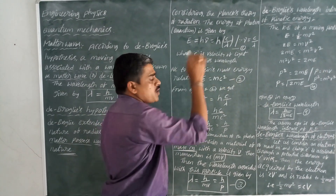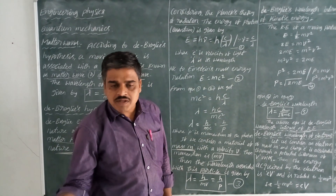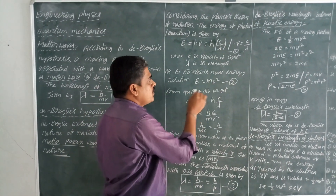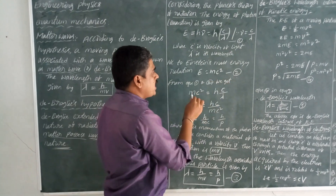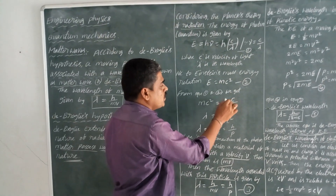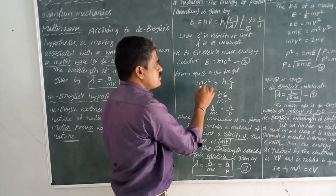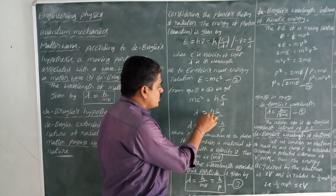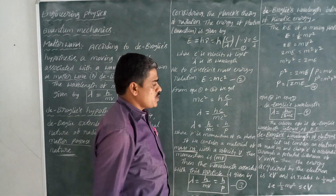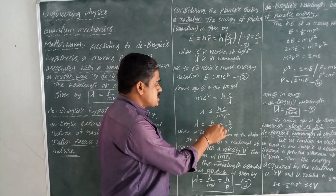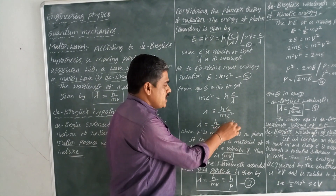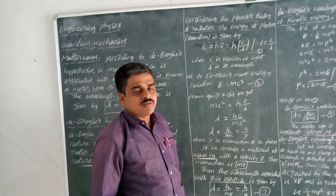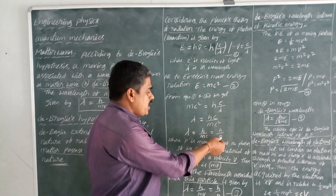According to Einstein's mass-energy relation, E is equal to mc squared. From equations 1 and 2, we get mc squared is equal to hc by lambda, therefore lambda is equal to h by mc, that is equal to h by p, where p is the momentum of the photon.